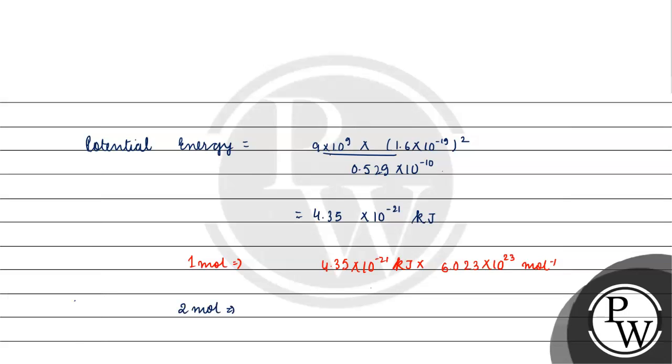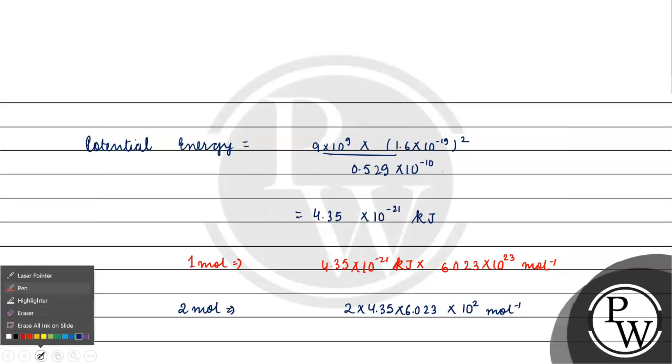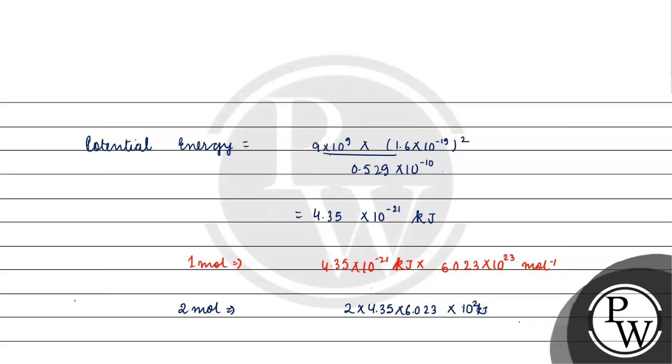If we need 2 moles, what will happen? 2 into 4.35 into 6.023 into 10 to the power 2 kJ per mole. When we have 2 moles, then per mole will cancel. The answer will come to 5239.14 kJ.